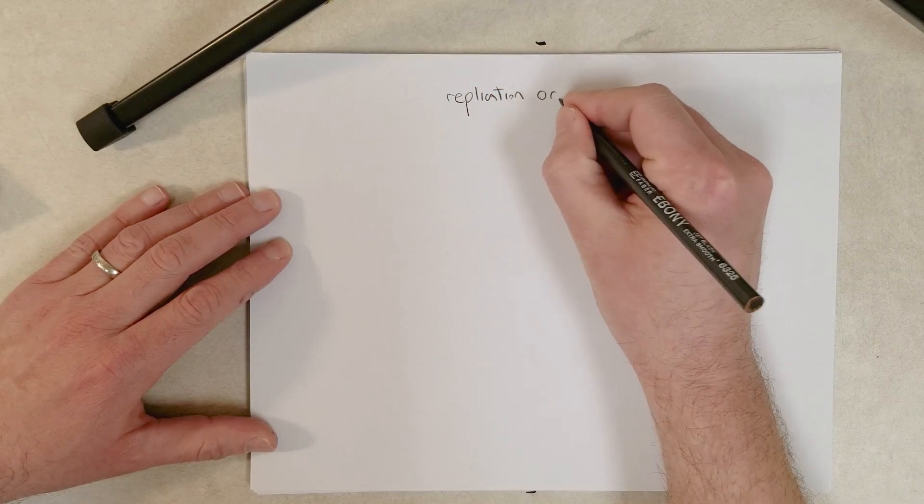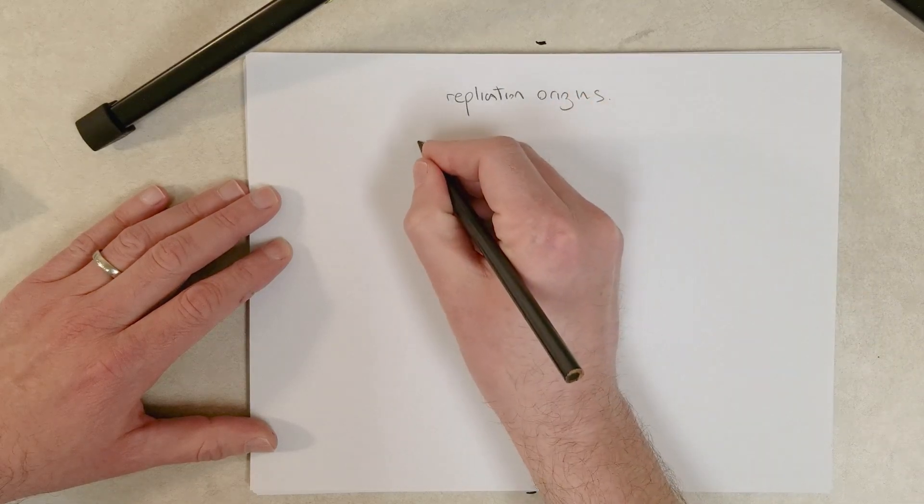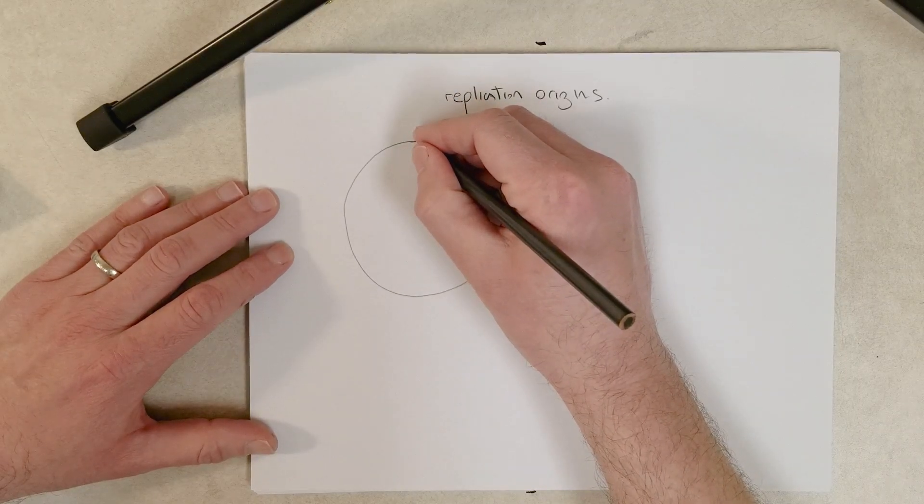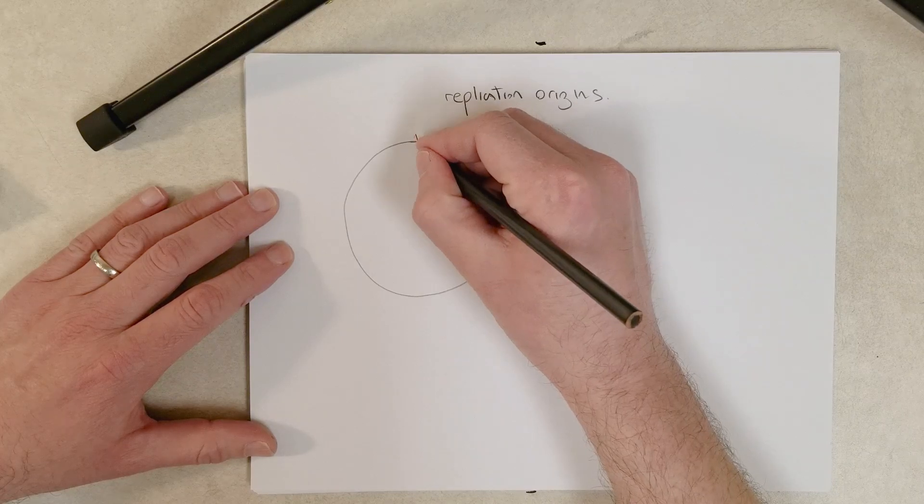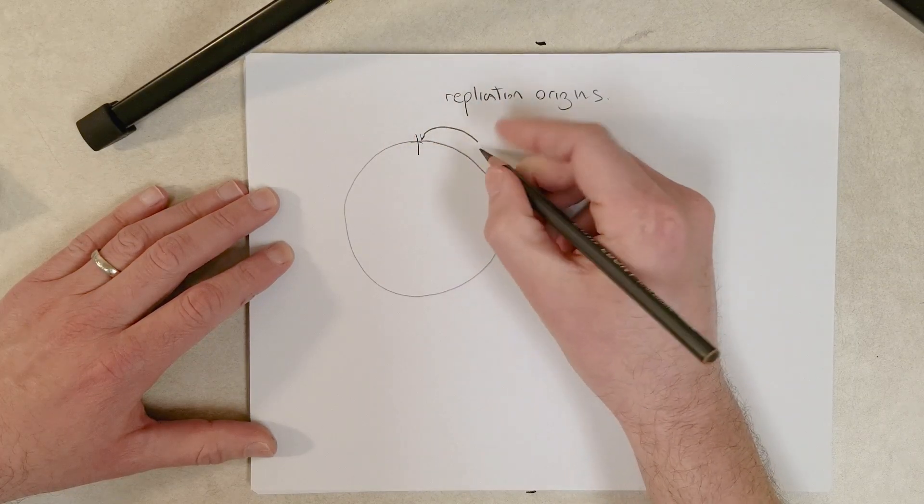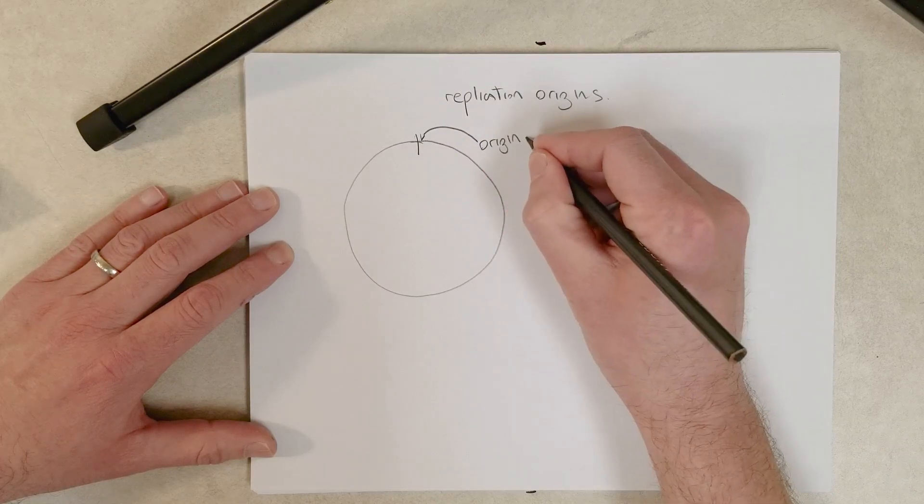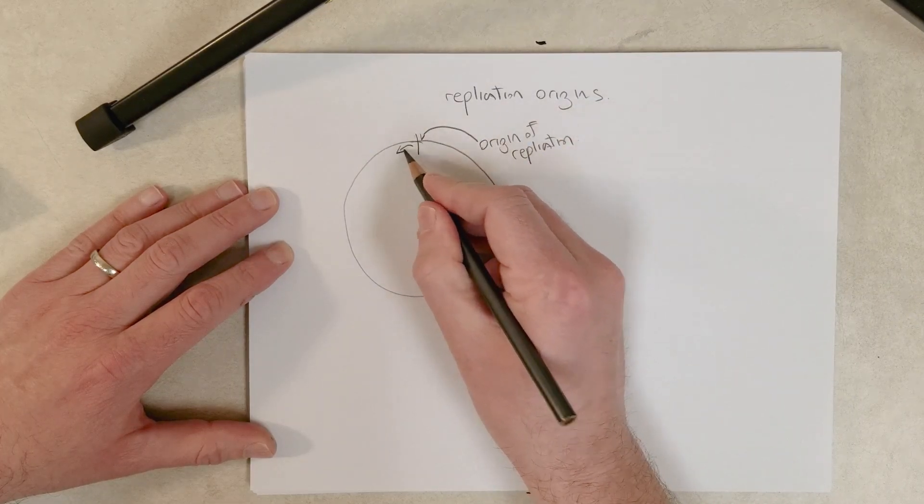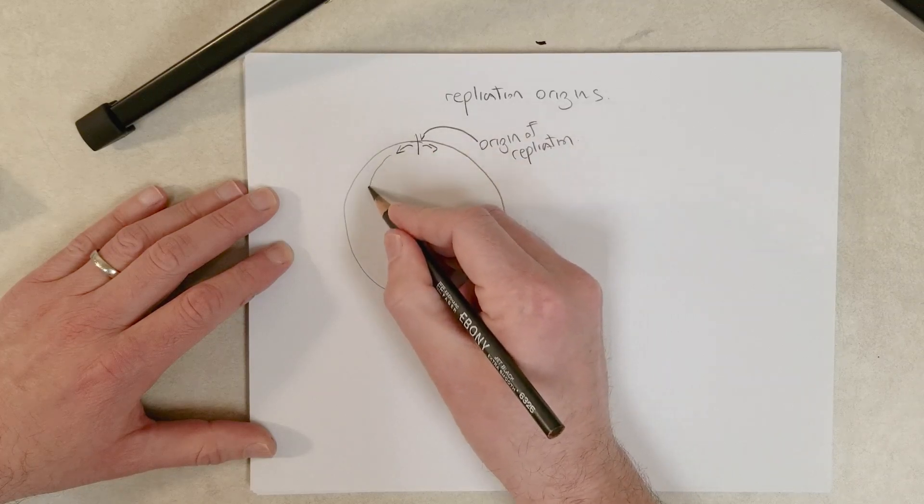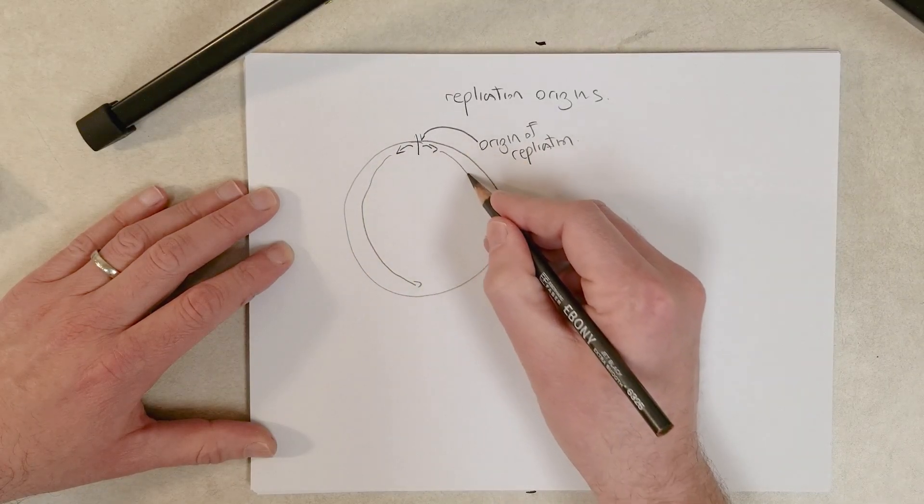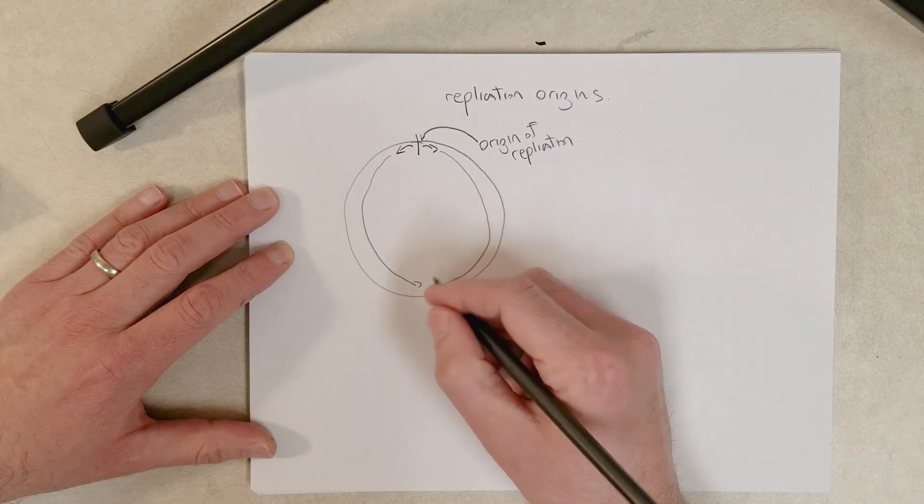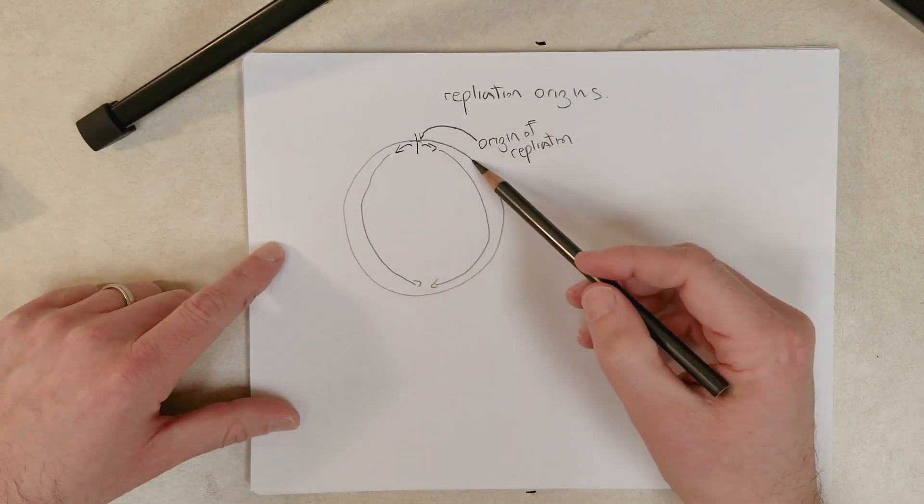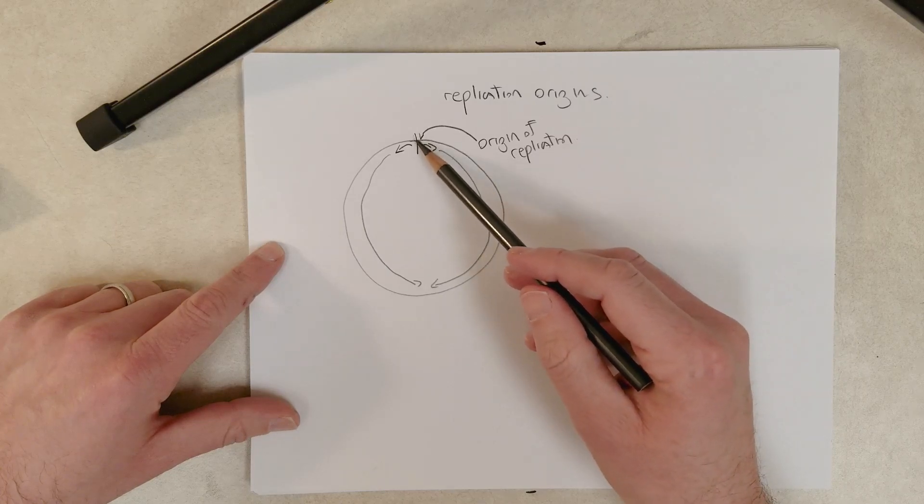And what we need to remember is that most prokaryotes, like E. coli, have a single circular chromosome that makes up the genome, and they have a single origin of replication. And replication occurs bidirectionally from the origin, so all the way to the other side of the chromosome, where replication ends. So prokaryotes can replicate their whole genome with one origin of replication.